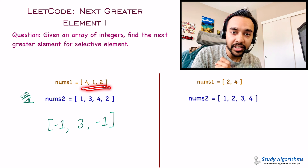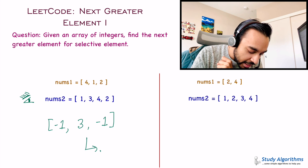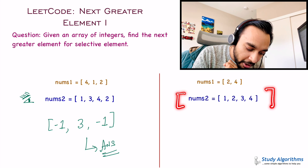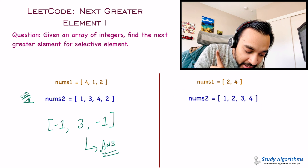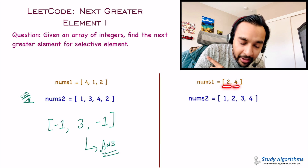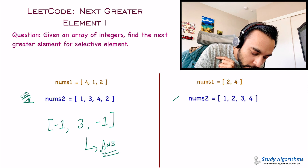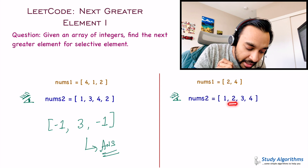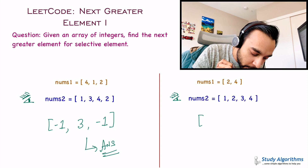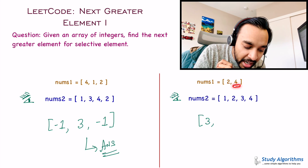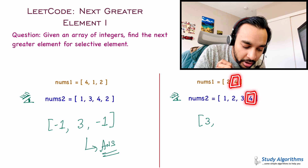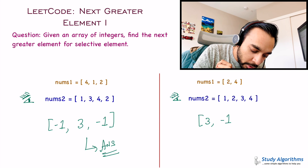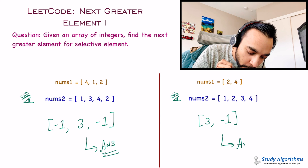Now you have covered all these integers, so for the first test case, this array would be your answer. Similarly, let us look at the second test case. I have the array 1, 2, 3, 4, and I have to find the next greater element for element 2 and element 4. The next greater element for 2 is 3, so I write down 3 in my output array. Then for element 4, I cannot find any next greater element, so I write down minus 1. The answer to test case 2 is this array.